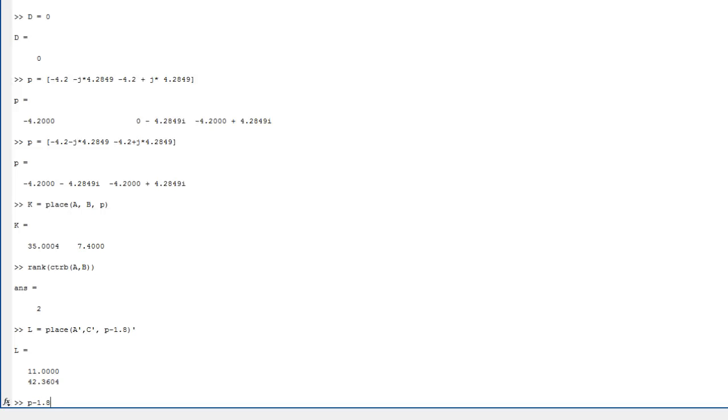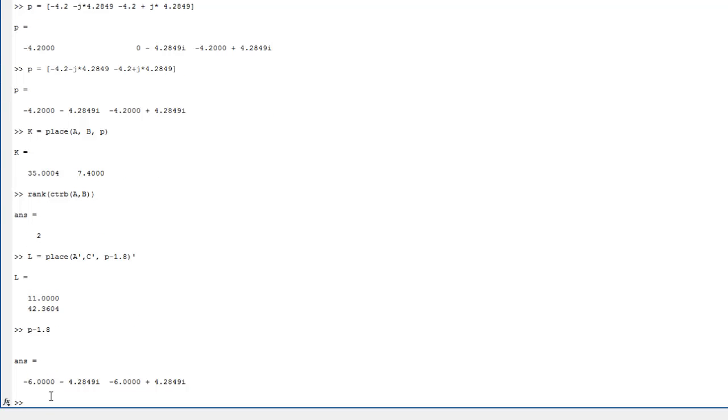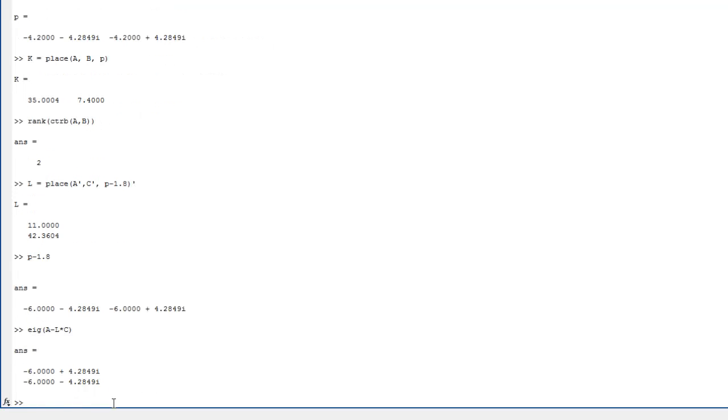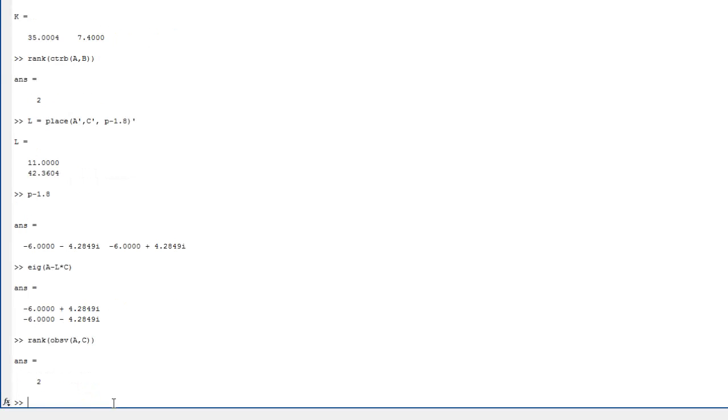And I can check the eigenvalues of A minus L times C. You see that I get those poles. And again, I should have checked the rank of the observability matrix given A and C, and that's full rank. So we're good there.